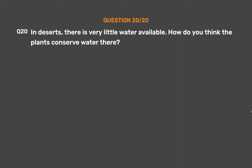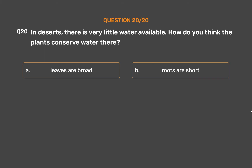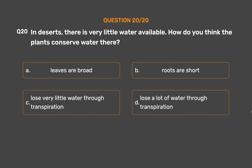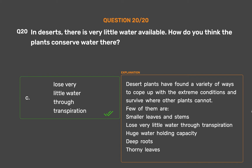Question 20. In deserts, there is very little water available. How do you think the plants conserve water there? Option A: Leaves are broad. Option B: Roots are short. Option C: Lose very little water through transpiration. Option D: Lose a lot of water through transpiration. The correct answer is Option C: lose very little water through transpiration. Desert plants have found a variety of ways to cope with extreme conditions — smaller leaves and stems lose very little water through transpiration, and they have huge water-holding capacity, deep roots, and thorny leaves.